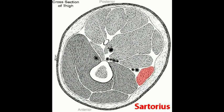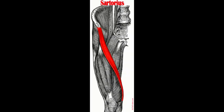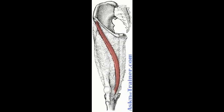Slips of origin from the outer end of the inguinal ligament, the notch of the ilium, the iliopectineal line, or the pubis may occur. The muscle may be split into two parts, and one part may be inserted into the fascia lata, the femur, the ligament of the patella, or the tendon of the semitendinosus. The tendon of insertion may end in the fascia lata, the capsule of the knee joint, or the fascia of the leg. The sartorius is also absent in a small percentage of people.